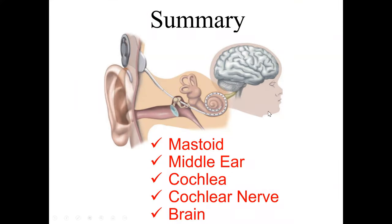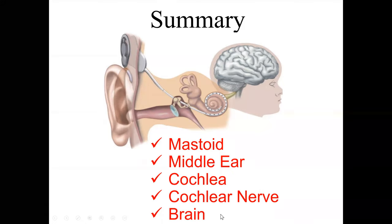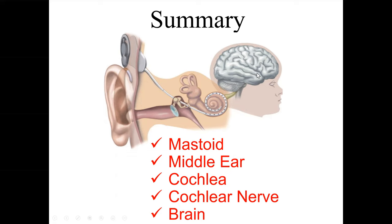In summary, our approach to pre-cochlear implant evaluation includes: evaluating the mastoid air cells for aeration and anomalous vascular structures; examining the middle ear cavity for mucosal thickening and lesions that could impede the cochlear electrode; assessing the cochlea for inner ear malformations and gusher risk; ensuring the cochlear nerve is present, since its absence is a true contraindication; and evaluating that accessory organ — the brain — for intracranial causes of hearing loss. Thank you very much for your attention.